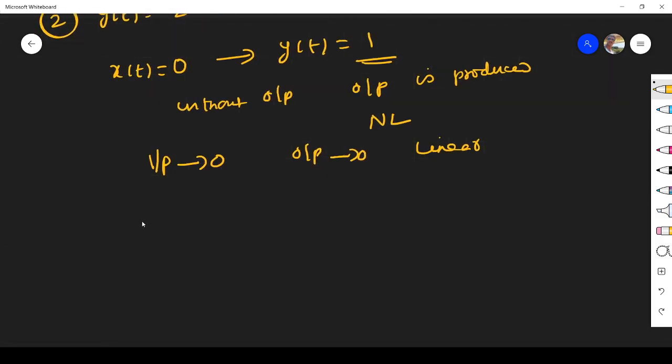Third one, we see y(t) = cos(x(t)). Here you see, output is a cosine function of input. So we know cosine will be like this. Surely there is no proportionality. It is a nonlinear system.